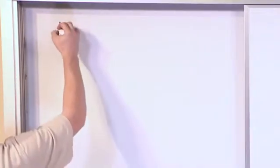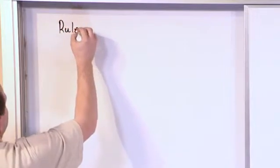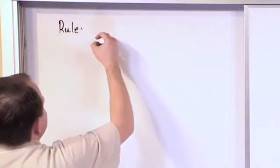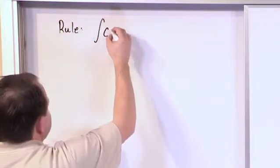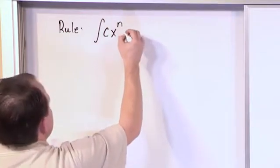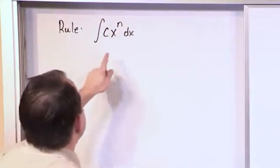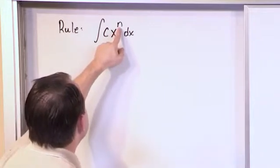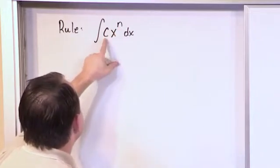So here is the rule to integrate polynomials. If you're integrating a constant times x to the n power dx, and what I mean by this is this is x to a number, which is a power, and this is a constant.